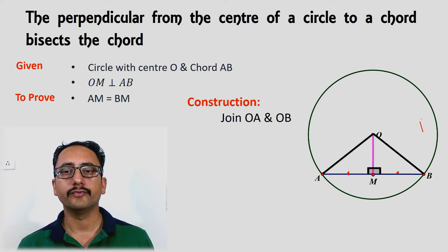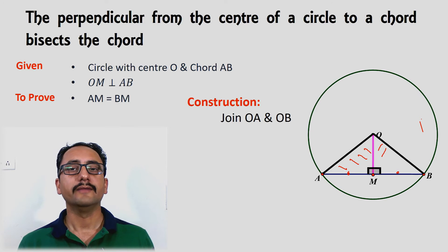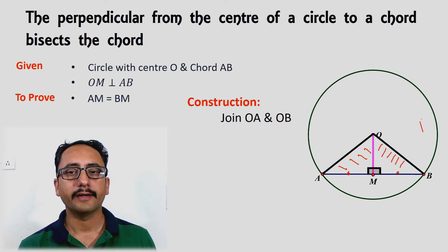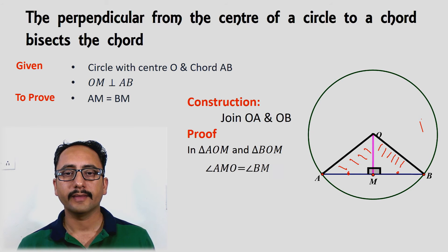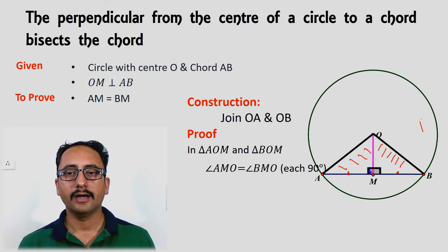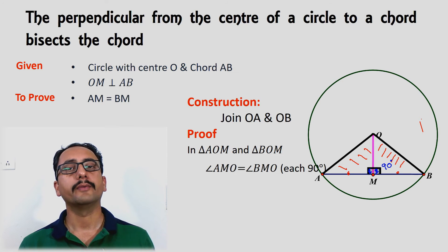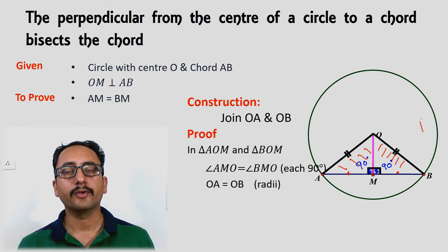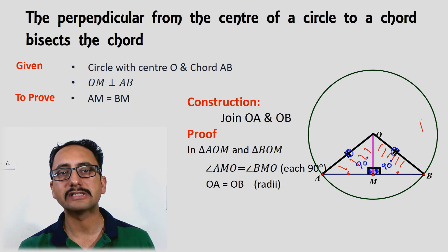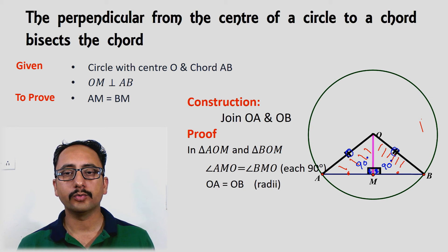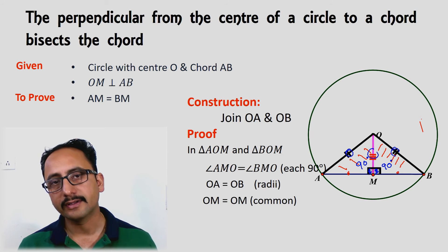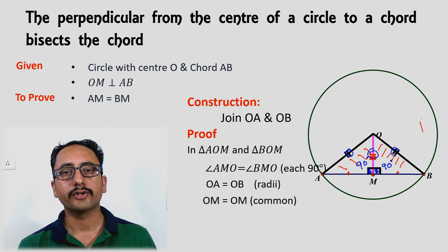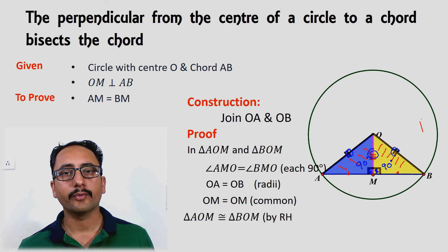I am going to prove that triangle OMA and triangle OMB are congruent to each other. Step by step: first, angle AMO equals angle BMO because both angles equal 90°, since OM is perpendicular to AB. Next, OA equals OB because these are radii of the circle, and all radii of a given circle are equal. Then, OM equals OM because OM is a common side. Therefore, the triangles are congruent by RHS (Right Angle Hypotenuse Side).